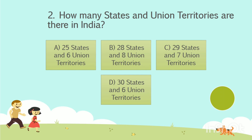Question number 2. How many states and union territories are there in India? Option A: 25 states and 6 union territories. Option B: 28 states and 8 union territories. Option C: 29 states and 7 union territories. Option D: 30 states and 6 union territories. Your time starts now.